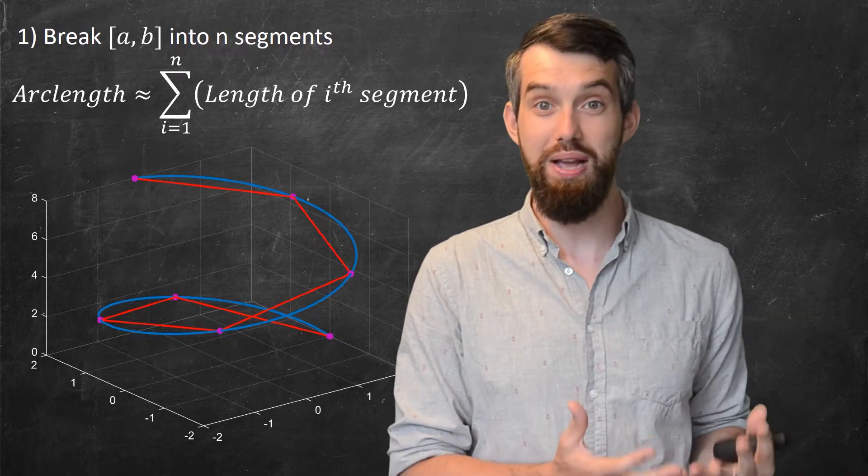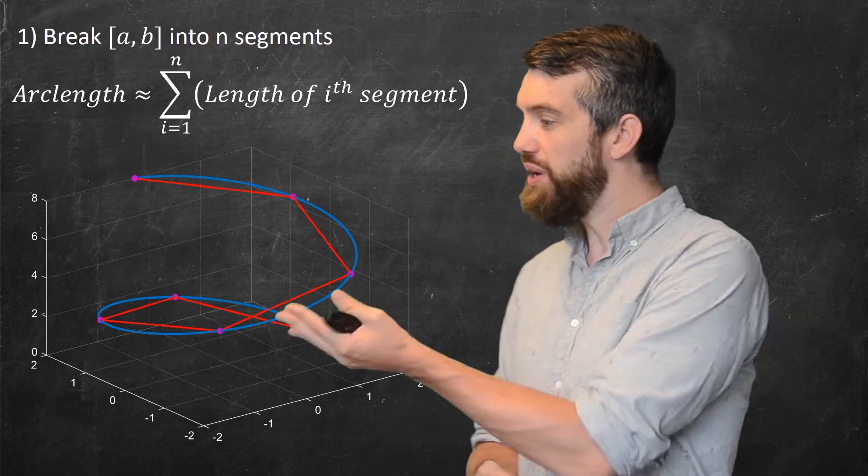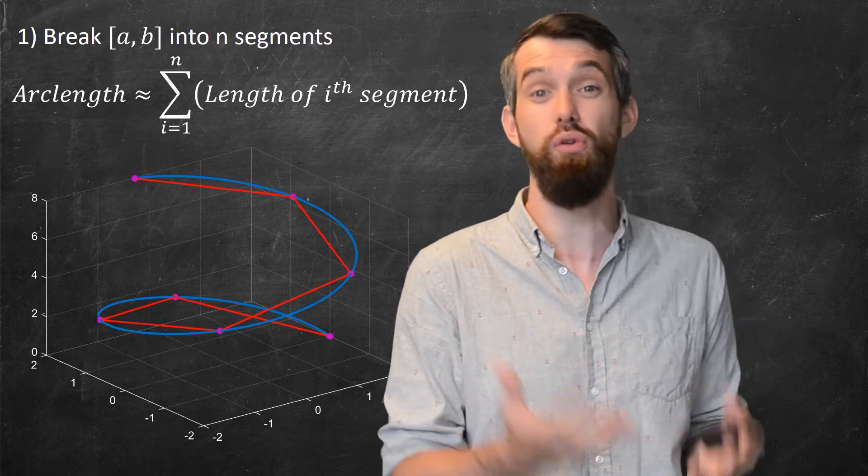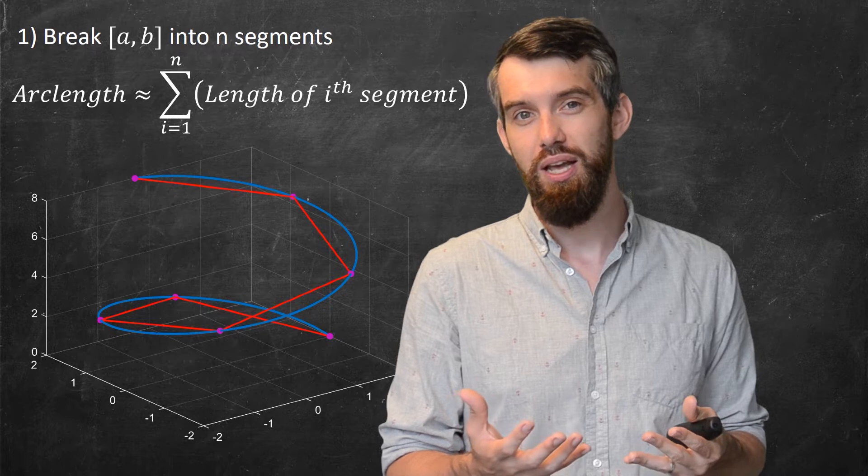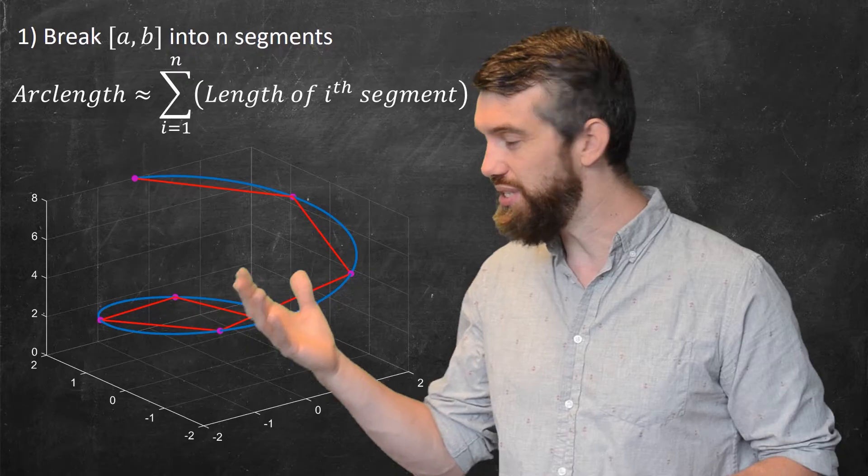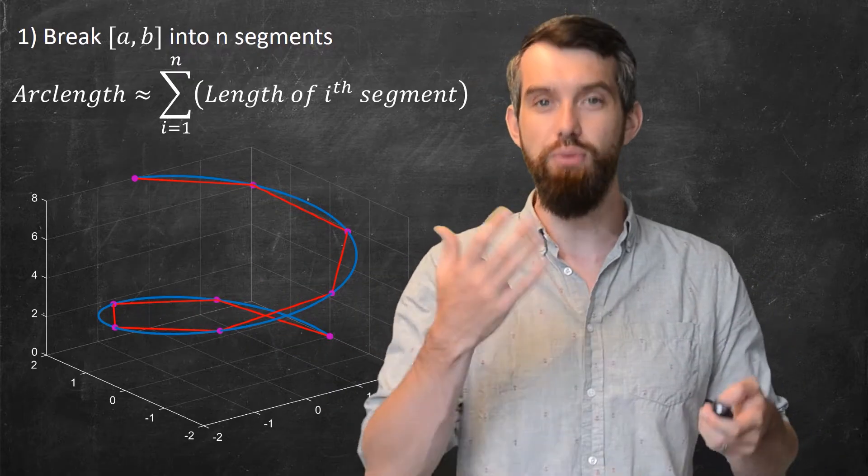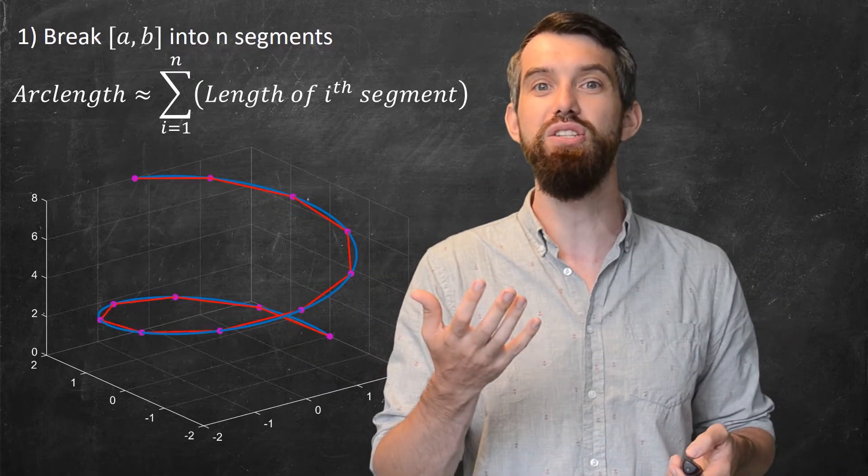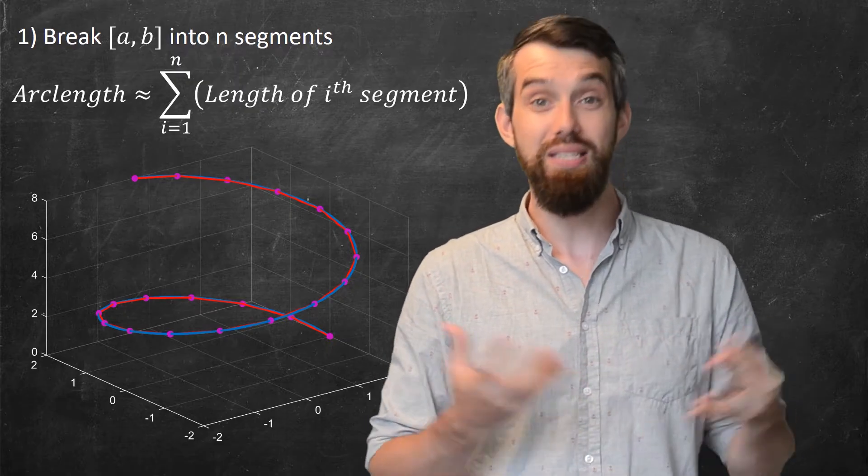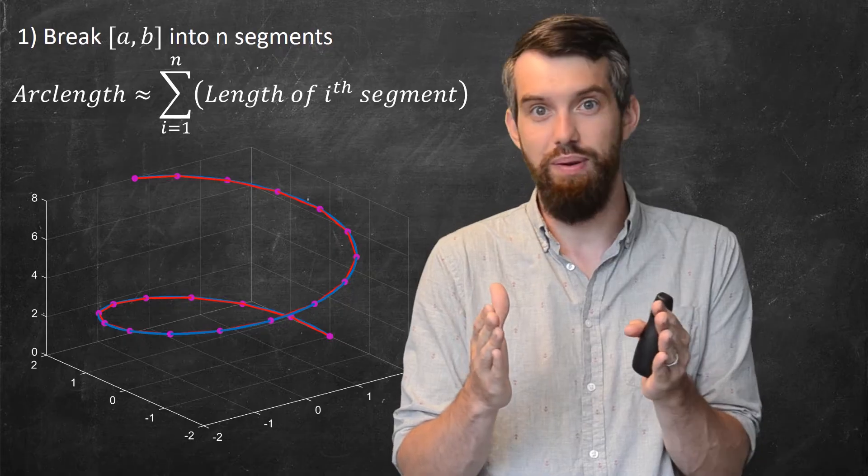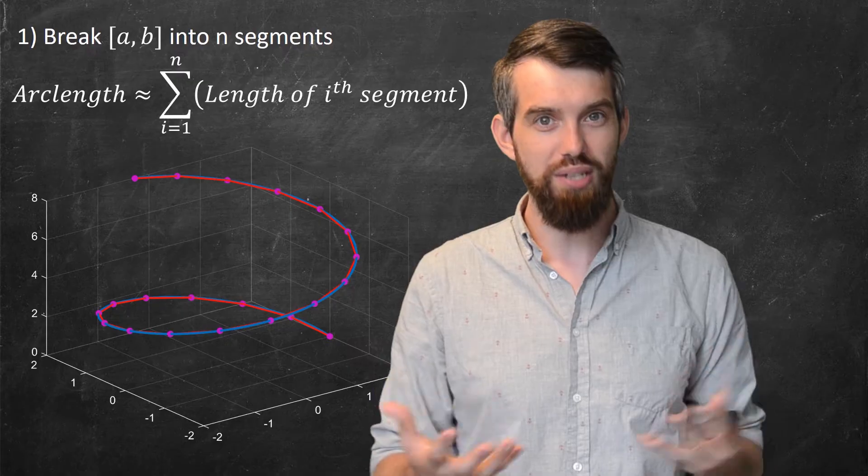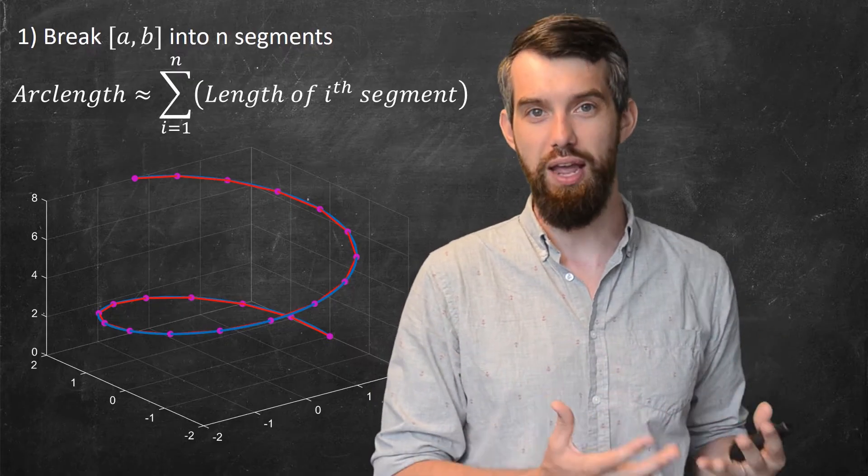Now, the problem you might say is, well hold on, how good of an approximation is this really? It looks okay, but certainly there's a lot of difference between these straight lines and these curvy segments. But what if I divide it up into more and more pieces? So instead of n equal to 6, what if I get n equal to 8, or n equal to 10, or n equal to 12, and so on? The larger my n is, the more ways that I break up that interval in the t parameter, the closer and closer and closer it appears that my approximation is getting to the original thing.